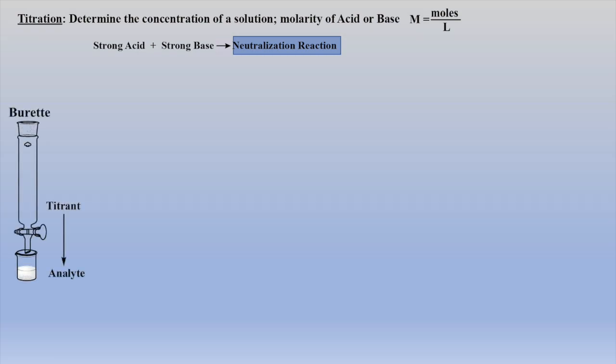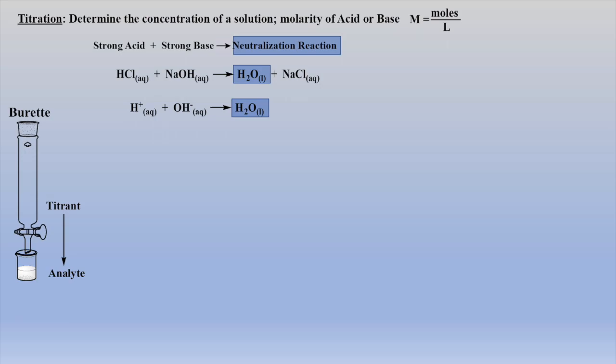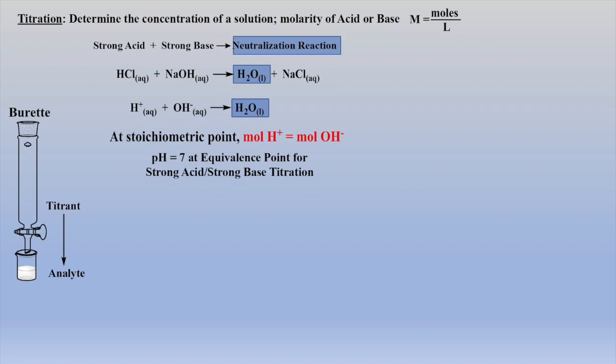A burette is the workhorse for titrations, and it will be used to deliver the titrant to the analyte for these neutralization reactions. An example neutralization reaction that could use this experimental setup is hydrochloric acid and sodium hydroxide, which can be rewritten in a simplified form. When moles acid equal moles base, then we are at the equivalence point or stoichiometric point, and that will be a pH of 7 if a strong acid and strong base undergo a neutralization reaction.